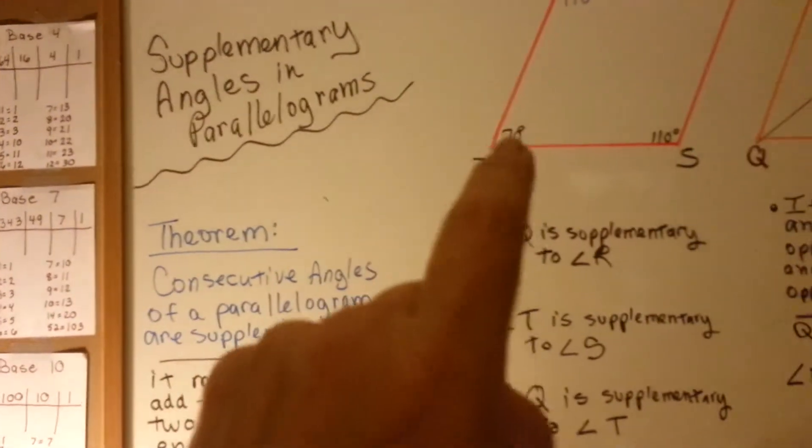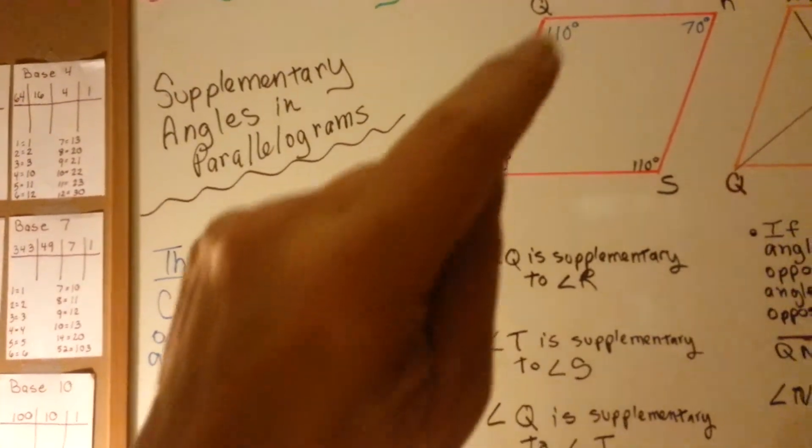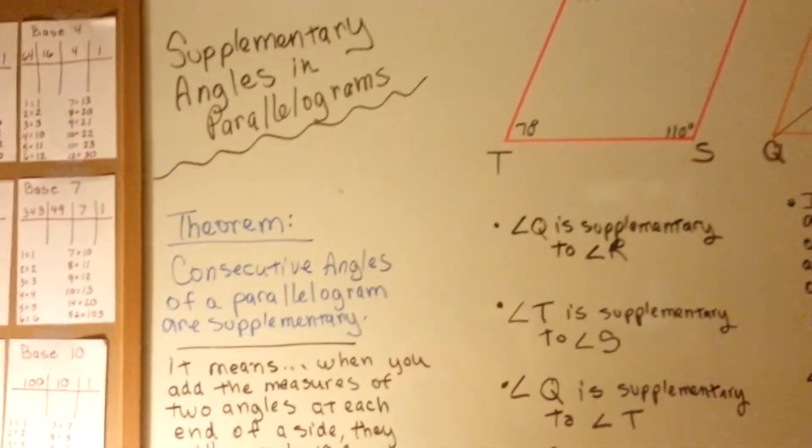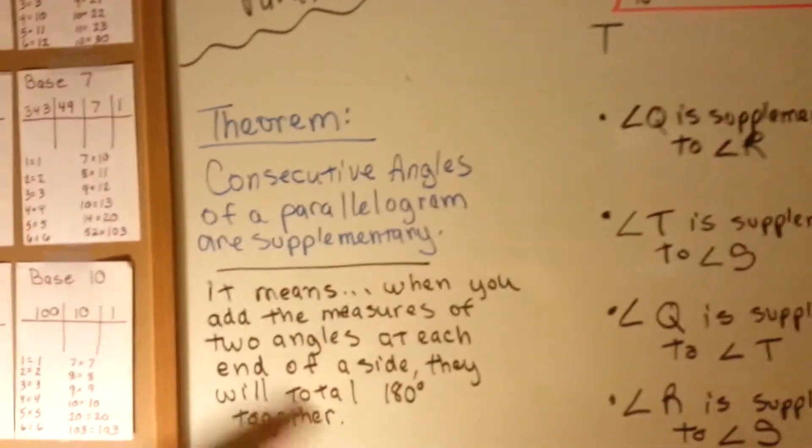Consecutive angles, that means in order, from this one to this one are supplementary, from this one to this one, not across. Consecutive means in order.